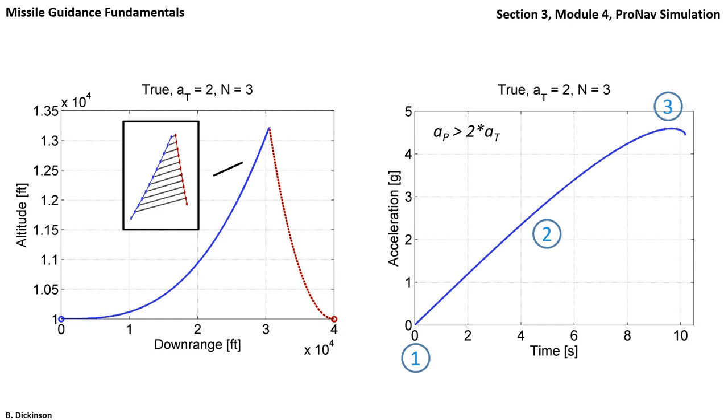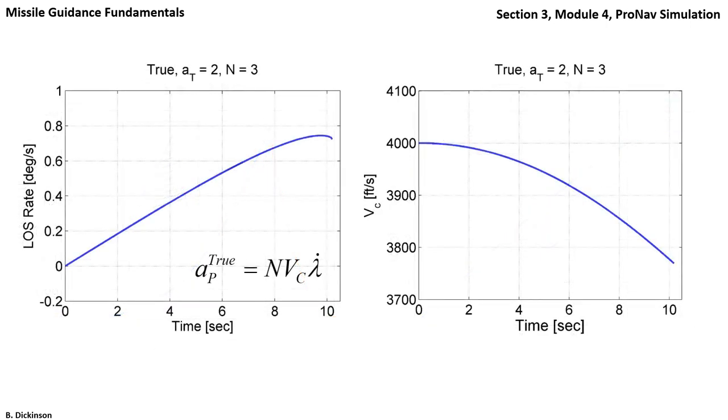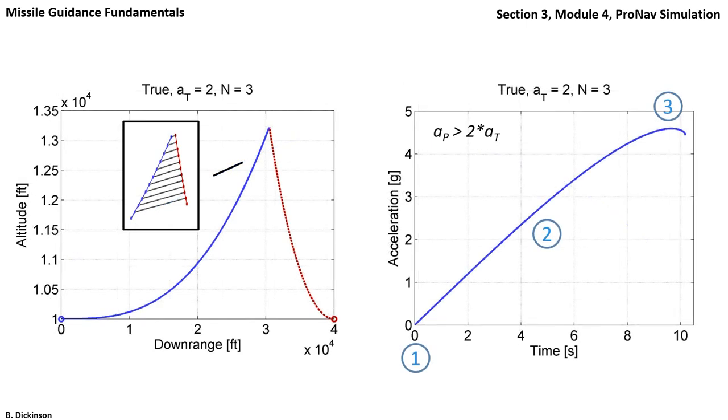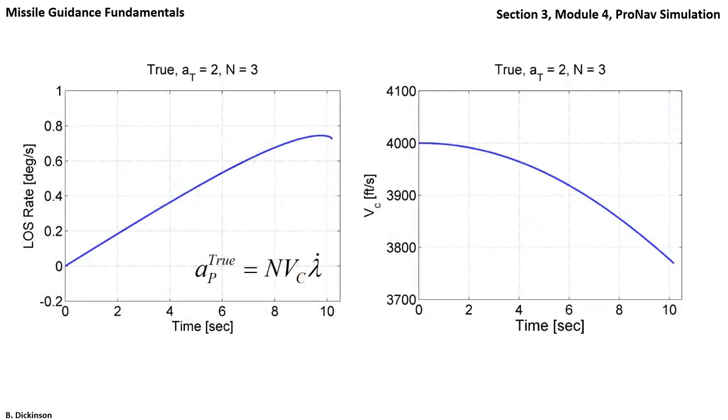And then we finally ask, what is behind the form of this acceleration curve? We have two inputs to proportional navigation: closing velocity and line of sight rate. So on the left-hand side is line of sight rate, on the right-hand side is closing velocity. Now what we can see is that closing velocity is roughly 4,000 throughout the engagement. Multiplied by the navigation gain of 3, that's a factor of 12,000 that multiplies lambda dot. And lambda dot ranges from 0 to just over 0.7 degrees per second. So the form of true pronav is really dictated by the form of lambda dot. And if we switch back to the acceleration profile, we can see the consistency in form.